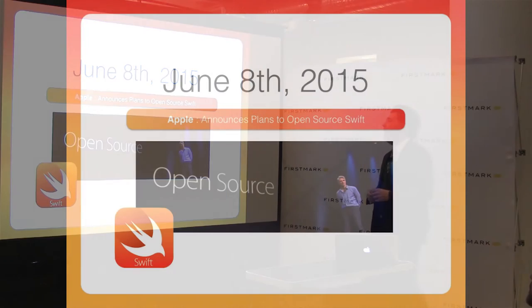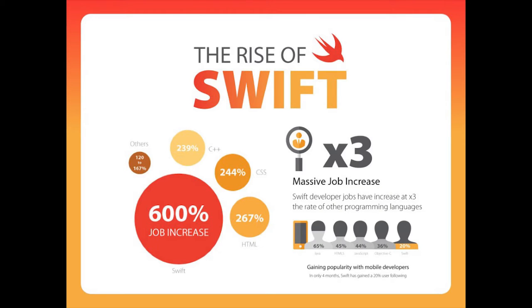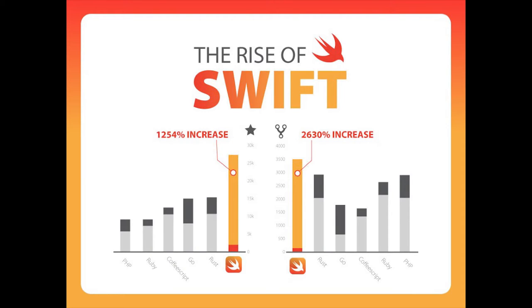A big massive inflection point happened last year: Apple announced that Swift is going to be open source. This was a mind-blowing moment because we realized this beautiful language could be used not just on iOS but somewhere else. If you look now, a couple of years later, the largest job increase in skills to have is Swift — Swift developers are like unicorns. There's been a huge surge of people on GitHub starring it, and I think Swift has had more commits in the last two months than any other project on GitHub.